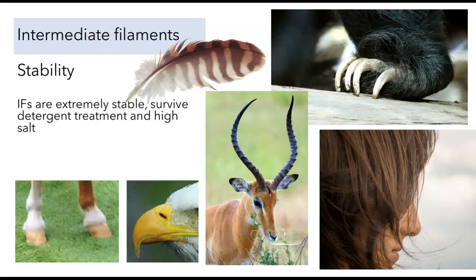Examples of this would be in feathers, the claws and the fur of a sloth, the hair on a human, the horns of the impala, the beak of an eagle, and the hooves of a cow. Each one of these is composed largely of intermediate filaments, and in the case of the human, the woman is probably washing her hair with a detergent on a near daily basis, and yet her hair persists for months or even years.